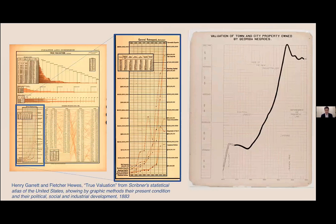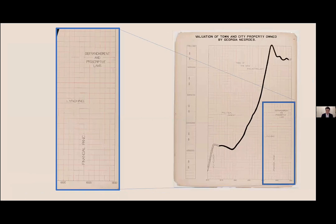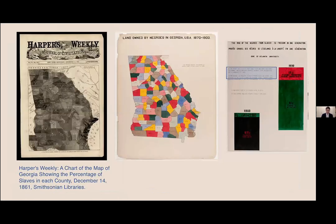In a line chart tracing financial valuation that follows precedents from past statistical atlases, the Du Bois team highlights the exponential growth in wealth achieved by Black Americans since emancipation. Yet they do not retreat from illustrating how the rise of the KKK or entrenchment of Jim Crow laws directly affected the prosperity of Black communities over the past 35 years. In a third example, Du Bois draws upon the history of choropleth maps used to document the population of enslaved peoples in the United States and puts it through a complete process of inversion — presenting in technicolor a celebration of the property now owned by Black residents in the state.